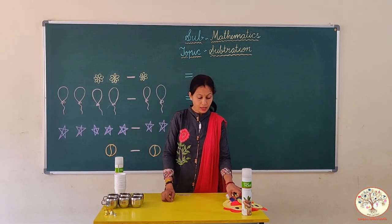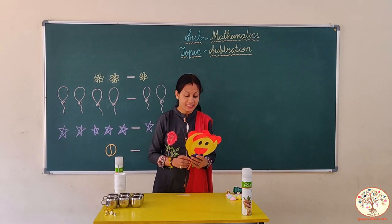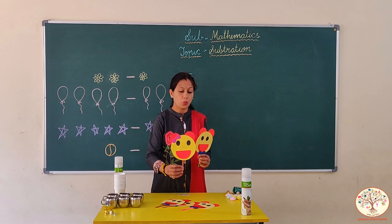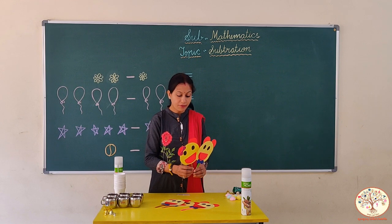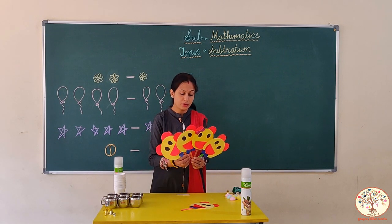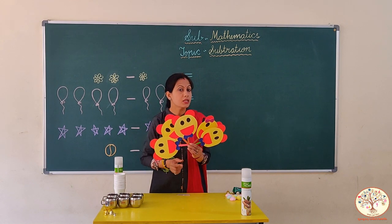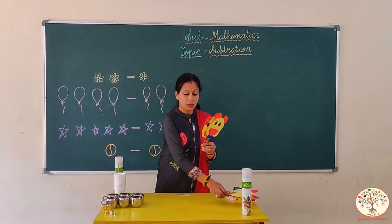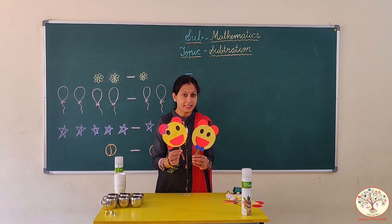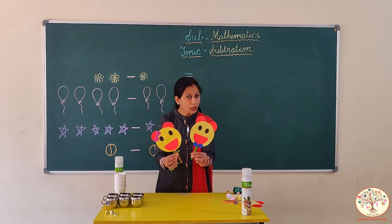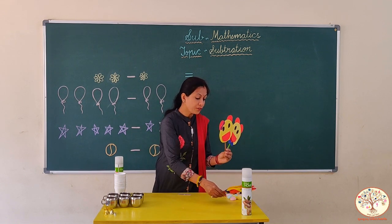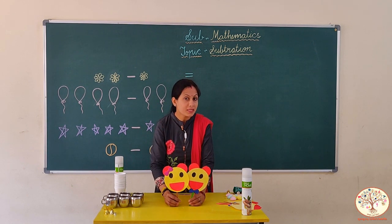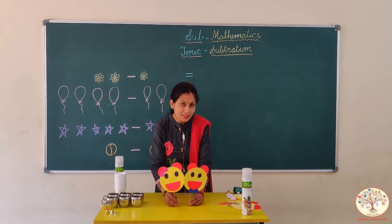Kids, look here. I have some teddy faces. Let's count them — one, two, three, four, five. I have five teddy faces. Now, if I remove three faces — one, two, and three — how many faces are left? Let's count — one, two. There are only two faces. Five minus three is equal to two. Humare paas two teddy faces bache.